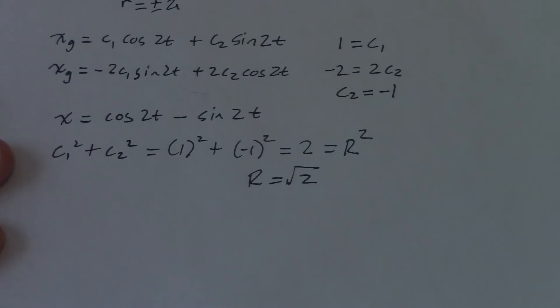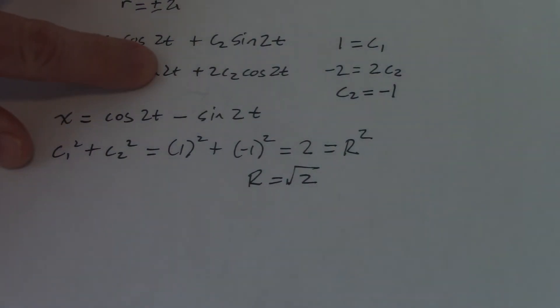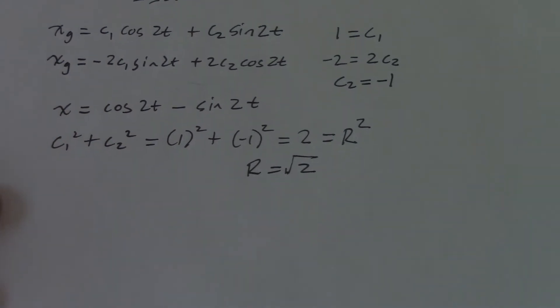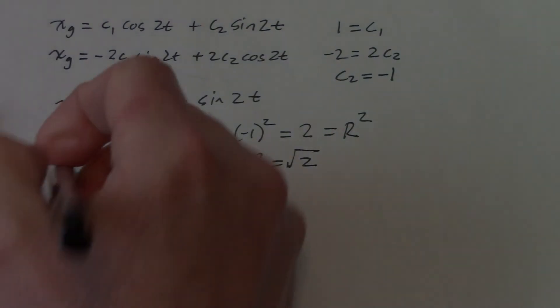I can already answer that's the amplitude. In fact, I can already come back here and say 2 pi over 2 equals pi. That's the period. But I'll write those down in the end. All right, the other part, phi, the phase shift.